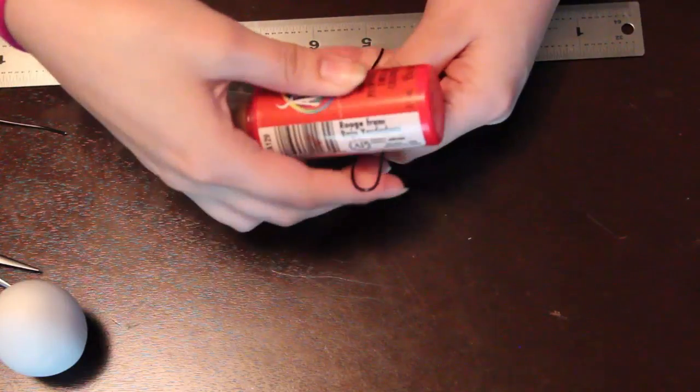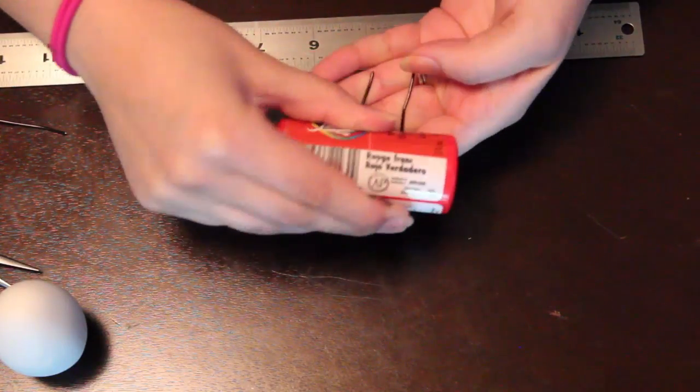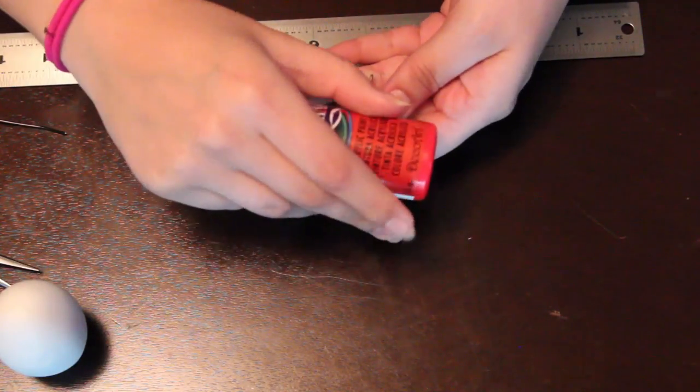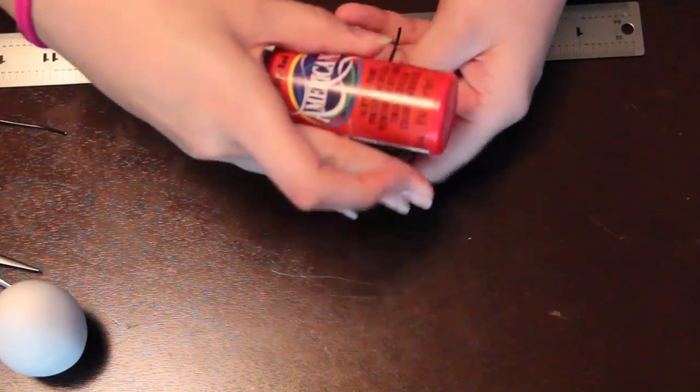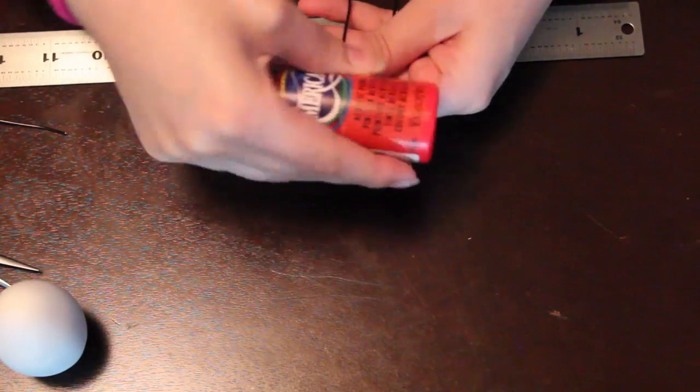Now grab a larger circular object. I'm using my paint container for this. And at the edge where you placed your curve in the beginning, we're going to add another curve.